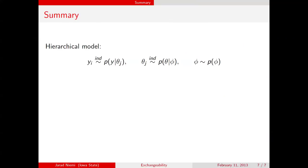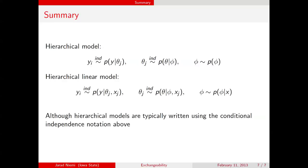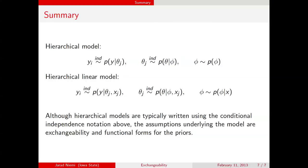The bottom line is that we typically write hierarchical models using conditional independence notation — whether for hierarchical models or hierarchical linear models. But the assumptions that actually underlie the model are assumptions about exchangeability of the observations and parameters, and some assumptions about the functional forms that the priors take on. Thanks.